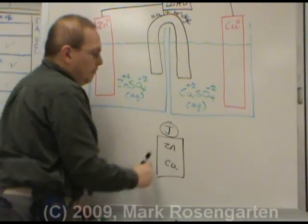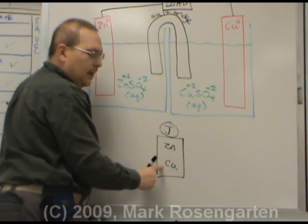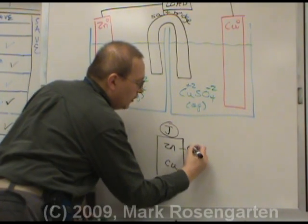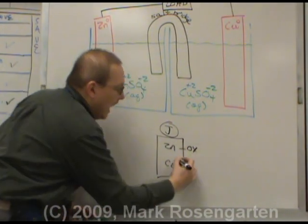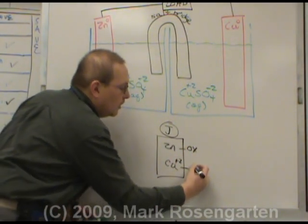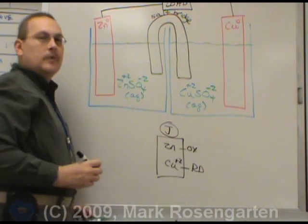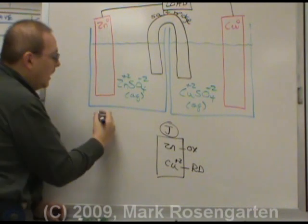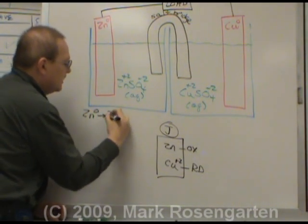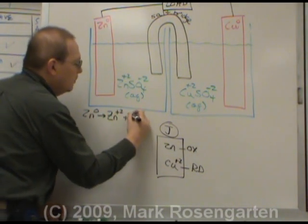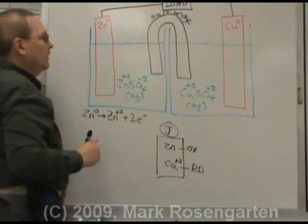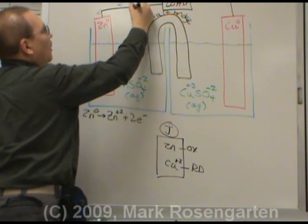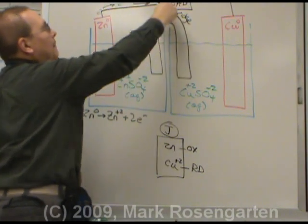Because zinc is listed higher than copper on reference table J, the zinc is going to undergo oxidation and the copper plus two is going to undergo reduction. So what happens is the zinc zero undergoes oxidation. Zinc zero turns into zinc plus two by losing two electrons. The two electrons go through the wire and power the device that we call a load.